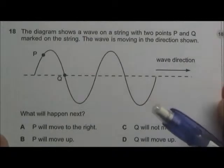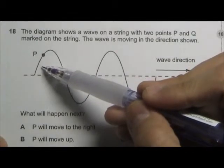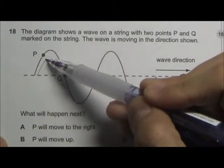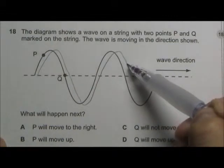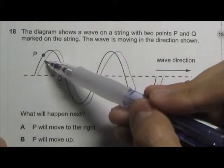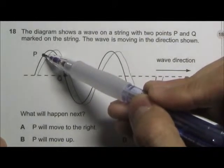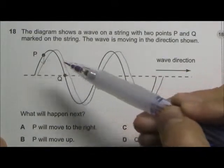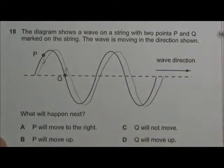What we have to do is to draw on the waveform at the next instance, so we just shift the entire wave slightly to the right. This is how the wave will look like in the next instance. In order to form the wave, particle P has to move downwards and particle Q has to move upwards. So the answer should be Q moves up, answer D.